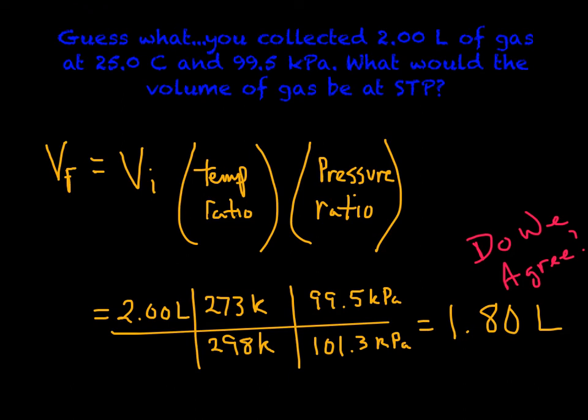We said that was going to be less than one, so it's got to be 273 Kelvin over 298 Kelvin. And our pressure ratio, we said, was going to be less than one, so that's got to be 99.5 kilopascals over 101.3 kilopascals. Now I got to do my math.